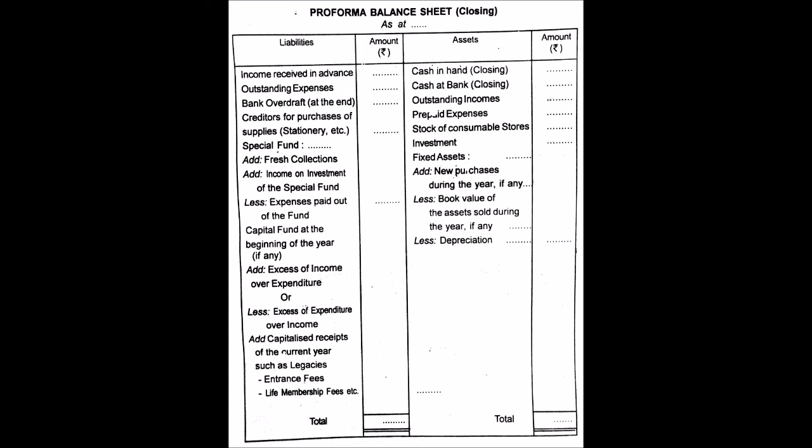Finally, the balance sheet is a statement of assets and liabilities held by an organization. The income and expenditure account is like a profit and loss account prepared in the case of trading concerns — you take all items of income and expenditure from your receipts and payments that belong to the current year and are revenue in nature. The balance sheet shows the assets and liabilities of the organization. These three statements comprise the financial statements of a not-for-profit organization.